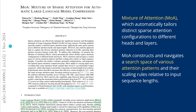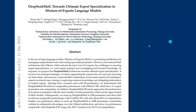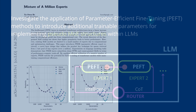A really interesting paper from Tsinghua University, November 2024: MoA — Mixture of Attention. It automatically tailors distinct sparse attention configurations to different heads and layers in the architecture. It constructs and navigates a search space of various attention patterns and their scaling rules relative to the input sequence length. The second main research stream involves replacing the standard feed-forward network with sparse Mixture of Expert layers and employing advanced expert segmentation techniques. The prime examples for this are DeepSeek Mixture of Experts and the Mixture of a Million Experts by Google DeepMind.